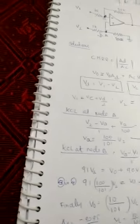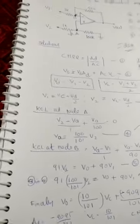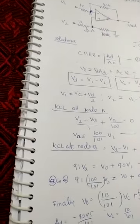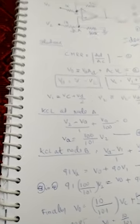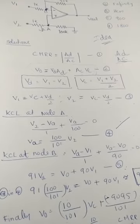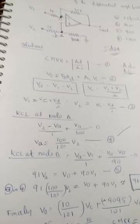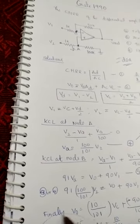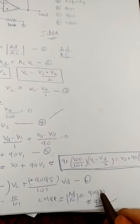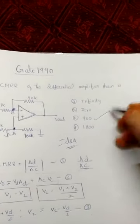Comparing with the standard equation, we find that AD is minus 9095/101 and AC is the common mode gain. The differential voltage gain AD is always negative — it is 180 degrees out of phase. Since CMRR is a modulus value, substituting AD and AC, we get approximately 909.5, which is approximately 900. So the right option for this problem is C, with CMRR equal to 900 — there are no units since it is a ratio of gains.